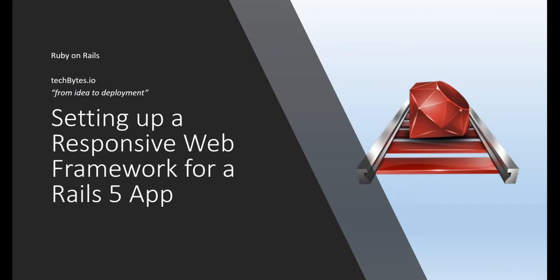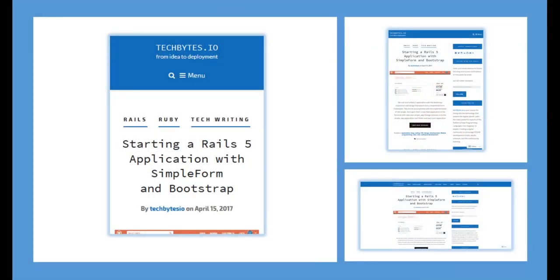First, let's look at what a responsive web framework is. A responsive web framework provides an application with an adjustable view — it responds to the size of the viewport. So if you're viewing the application on a phone, a tablet, a desktop, or maybe even a TV, it will properly adjust to the size of the screen, maximizing the landscape available to it.